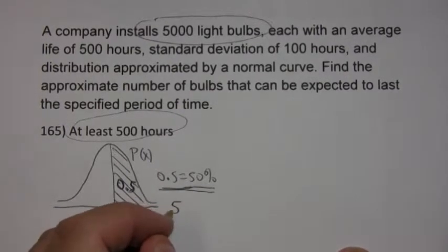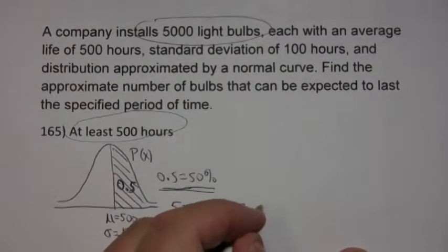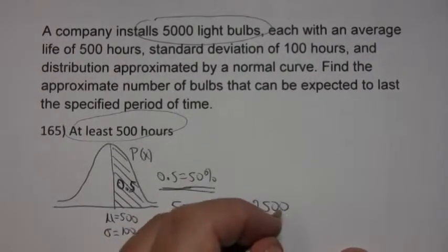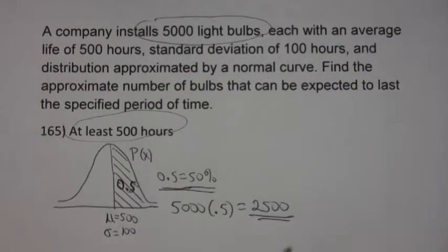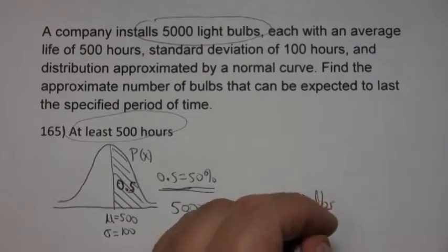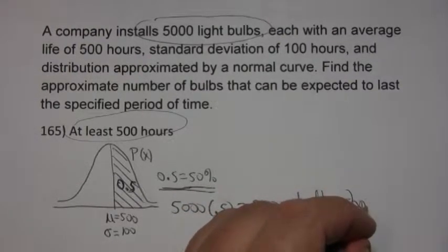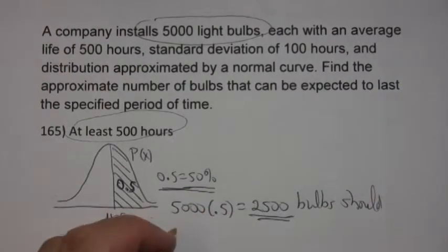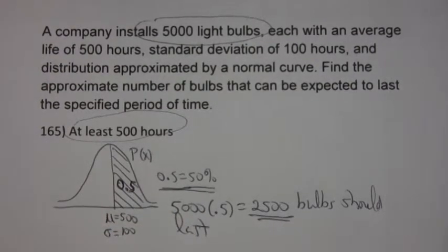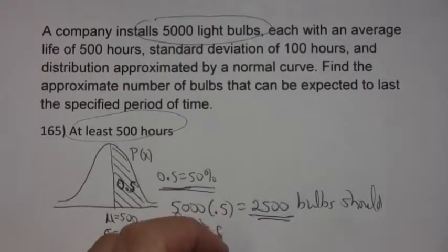Well, 5,000 bulbs, half of them is 2,500. So 2,500 bulbs should last at least 500 hours.